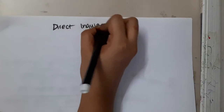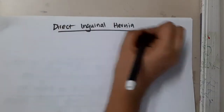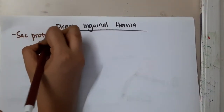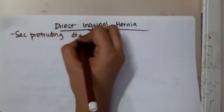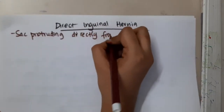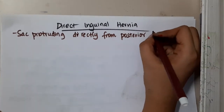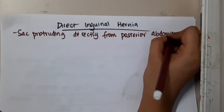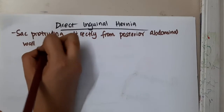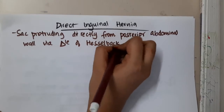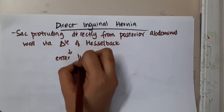Next, if you see direct inguinal hernia, you will see that the sac is protruding directly from the posterior abdominal wall. It won't go through the deep ring and then the superficial ring — all that won't be there. It will directly be protruding from the posterior abdominal wall via the triangle of Hesselbach, and then it will enter the inguinal canal.